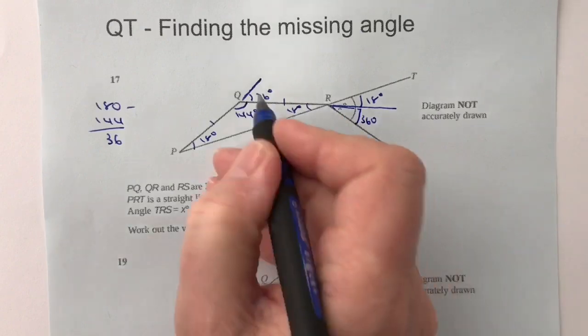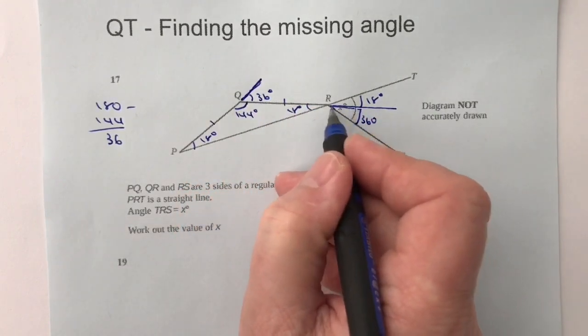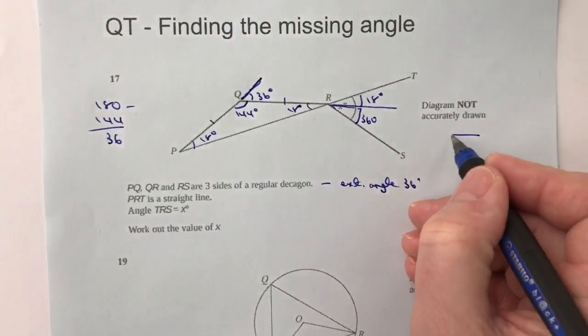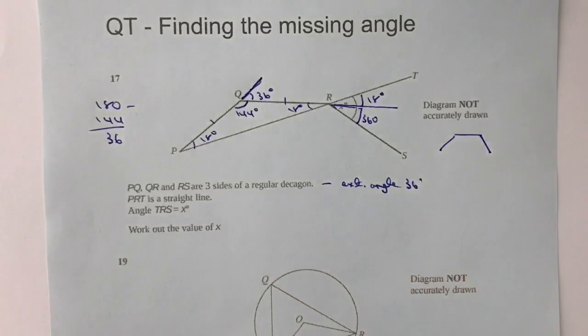Okay, and it's this angle here is 36 and this angle here is 36, because what you've got with a regular shape, so it's going to be difficult for me to draw a 10-sided shape, but if you can imagine, I've got something like that, let's say the top half of a hexagon.